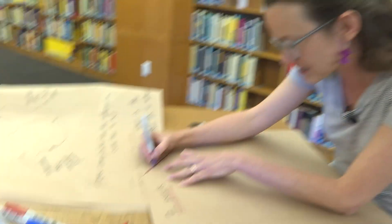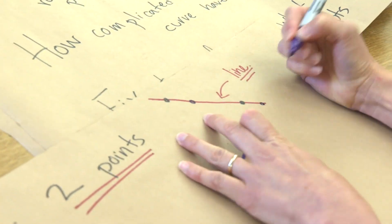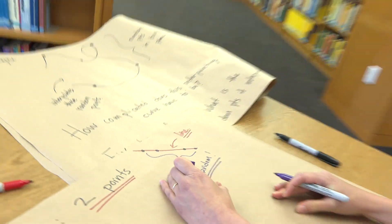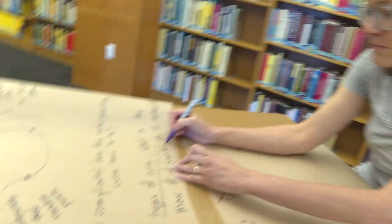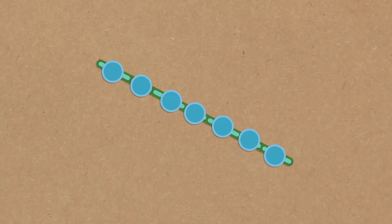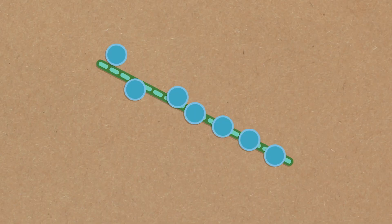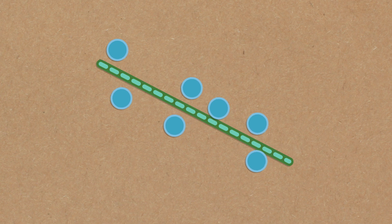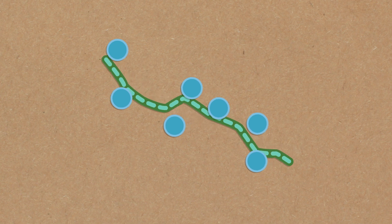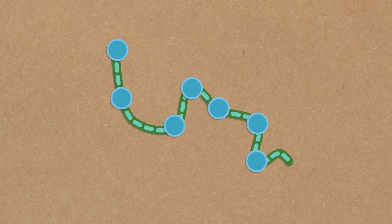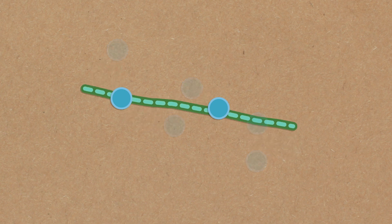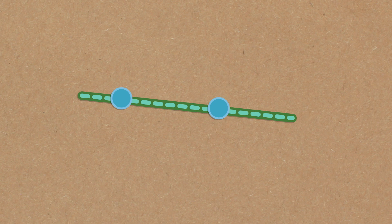A line does pass through infinitely many points, but those points are not random. You can think of it this way: take any points on the line and bump them in random directions — they would no longer lie on a line. You'd need some twisty curve to interpolate those bumped points. So the key word is 'random.'